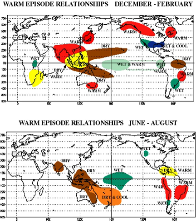El Niño is accompanied by high air pressure in the western Pacific and low air pressure in the eastern Pacific. El Niño phases are known to occur close to every four years; however, records demonstrate that the cycles have lasted between two and seven years.